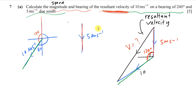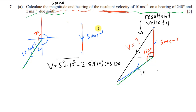To find the speed, we use the cosine rule. So v squared equals 5 squared plus 10 squared minus 2 times 5 times 10 times cos(120). Make sure your calculator is in degree mode, then square root your answer. You should get 13.23 meters per second.